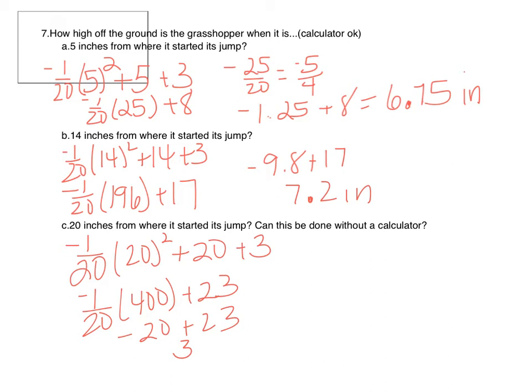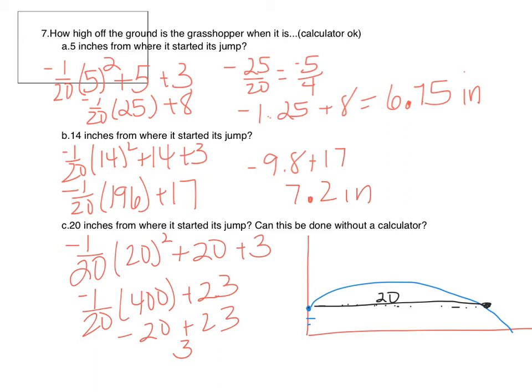Could x equals 20 have been done without a calculator? Yes — we know the grasshopper can jump 20 times his length. As a 1-inch grasshopper he could jump 20 inches, ending at the same height he started from — 3 inches. He actually lands past 20 inches because he started higher off the ground, giving him a little extra room to fall. So that point (20, 3) could have been found without a calculator.